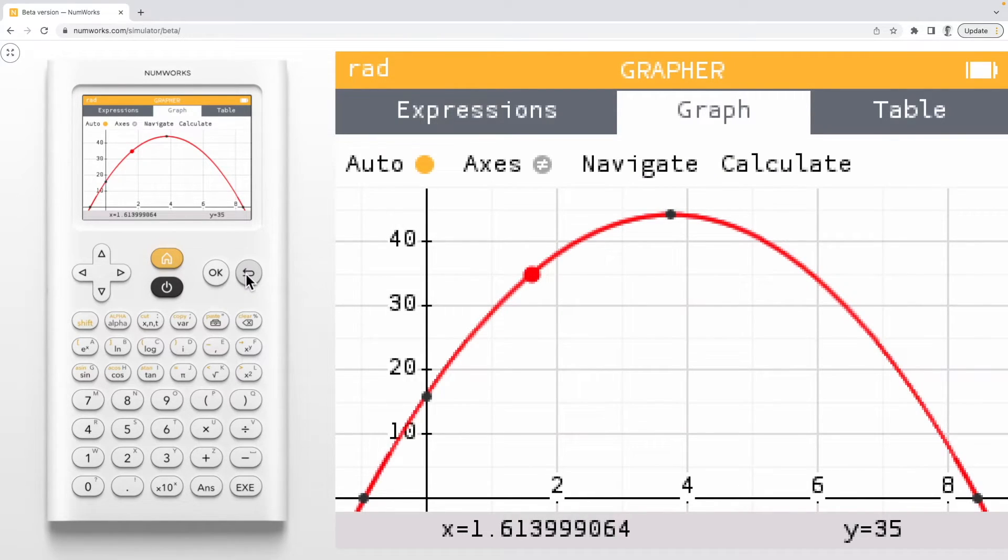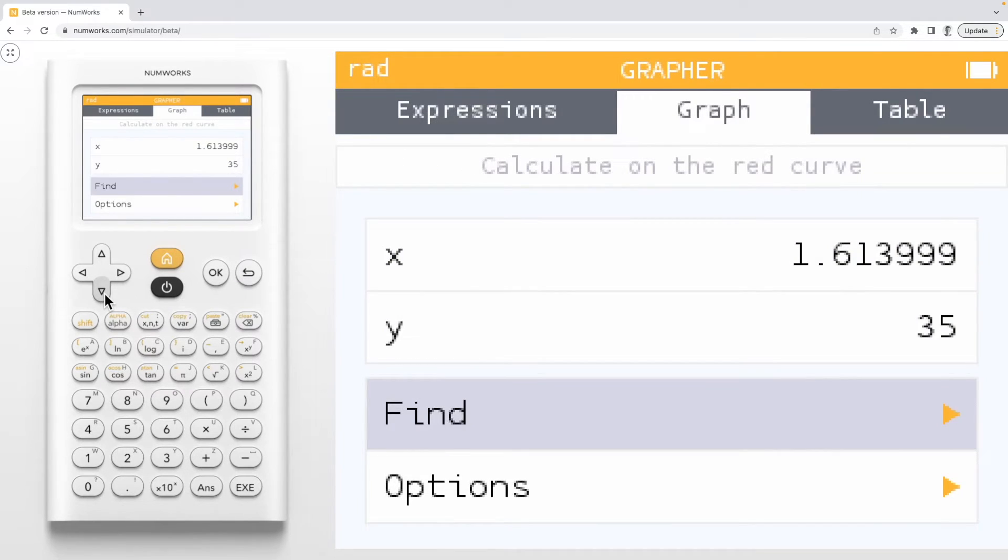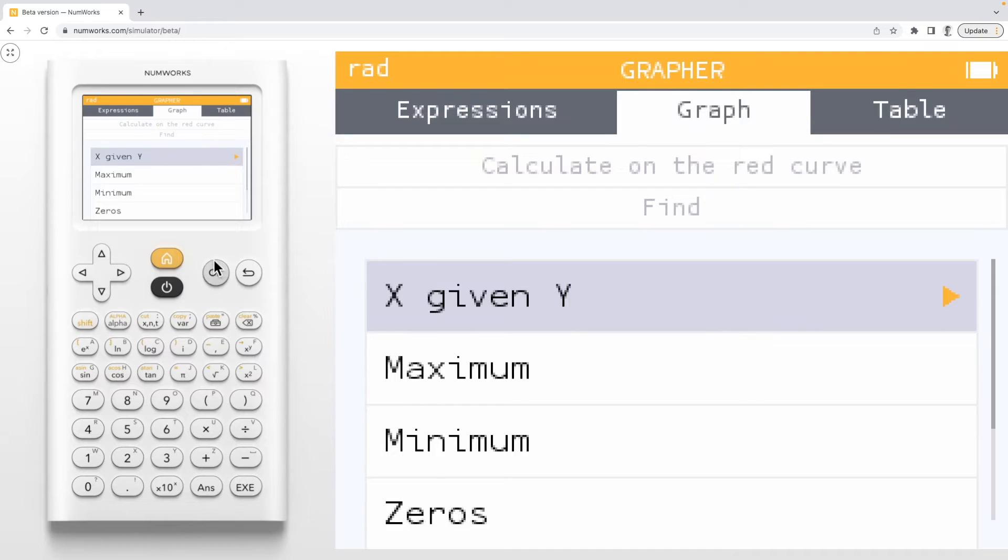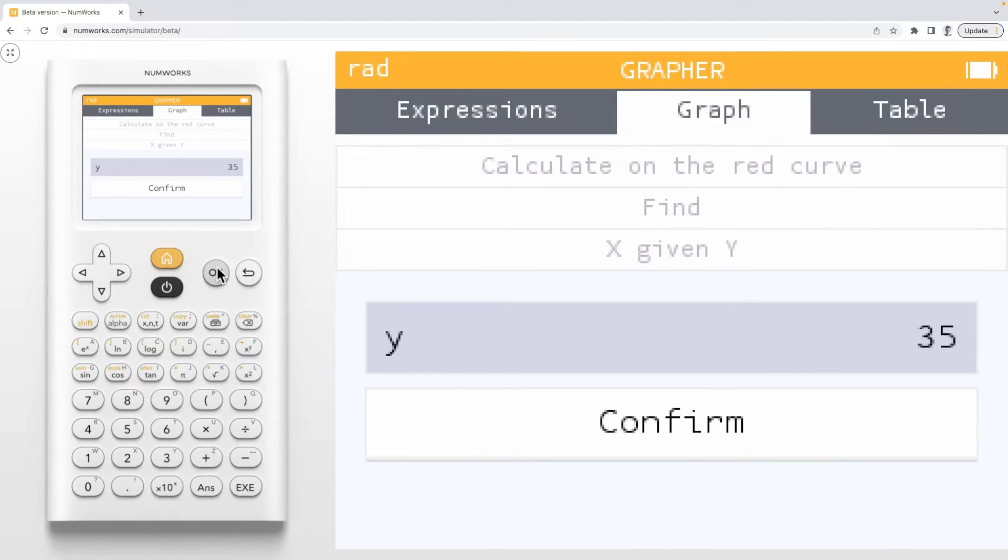Another way to do this is in our find menu. Press OK to open the calculate menu and navigate down to find. Select x given y, input a given y value like 40, and select confirm.